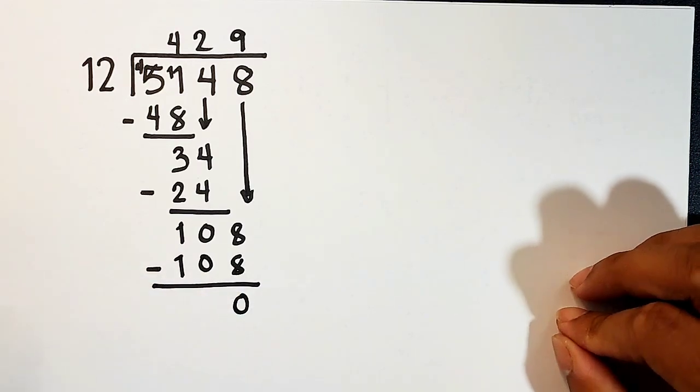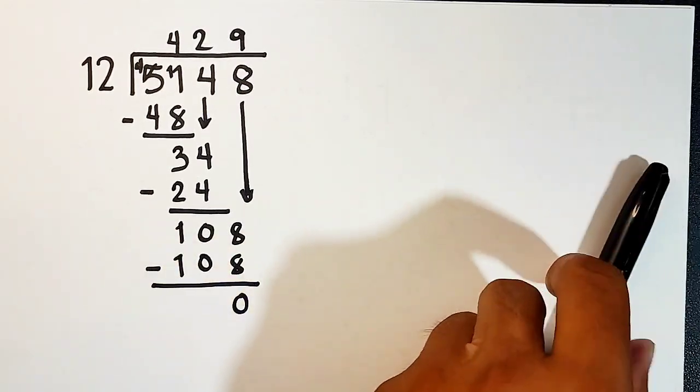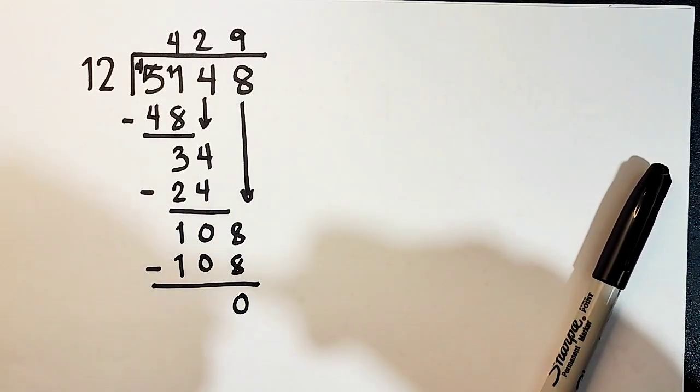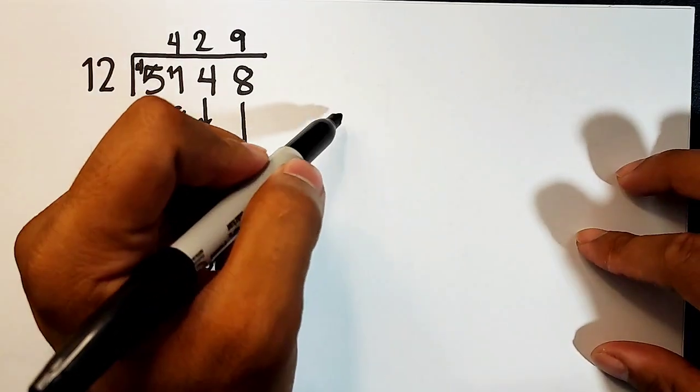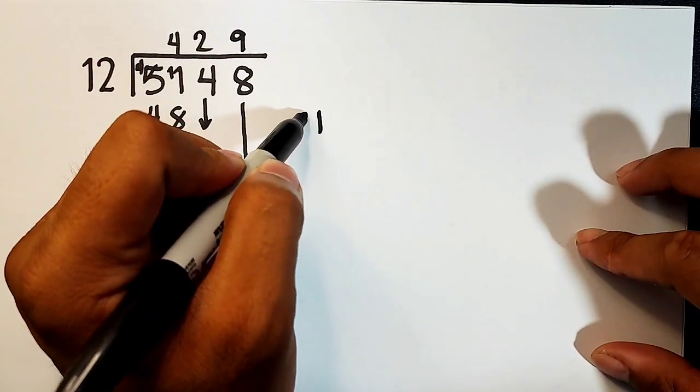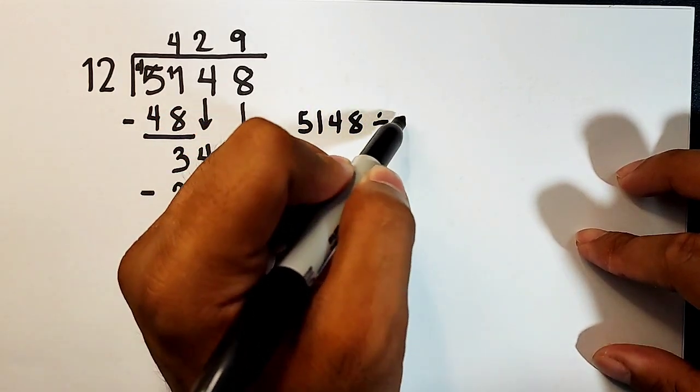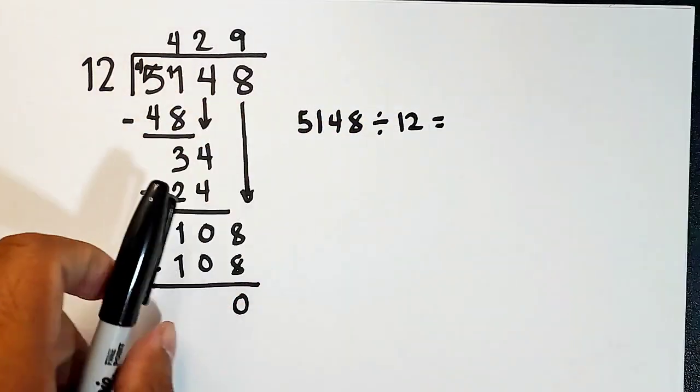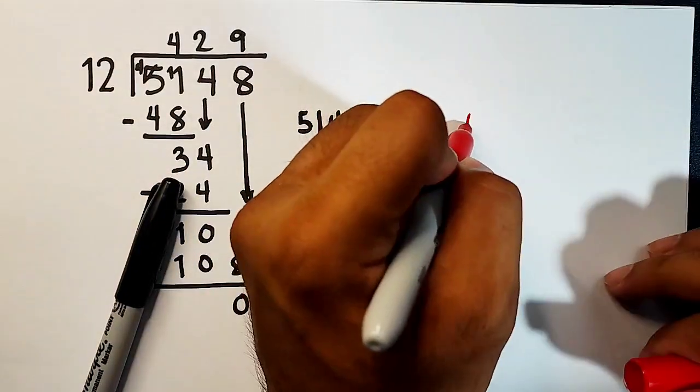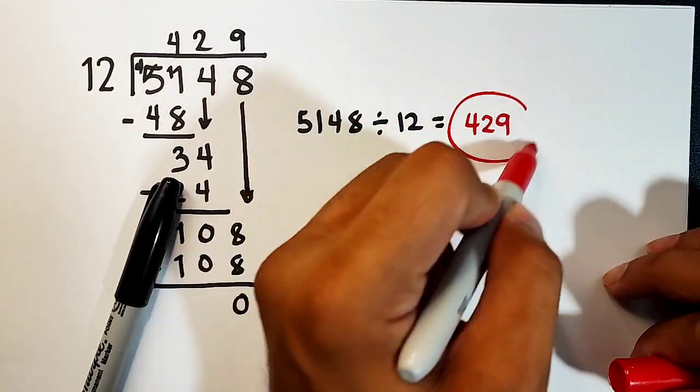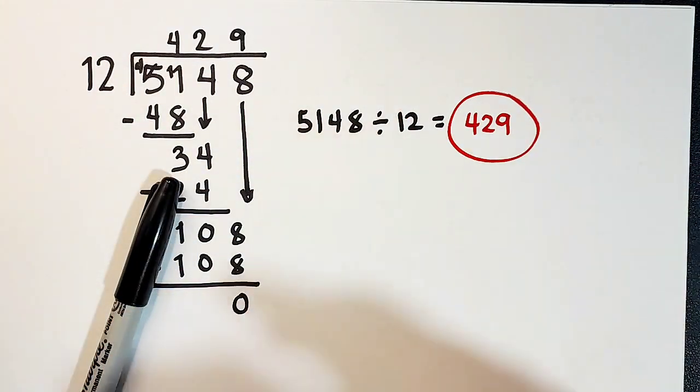Subtract this, and you have the remainder of 0. Meaning, guys, here, when you are dividing 5,148 divided by 12, your quotient is 429. This is the answer, guys.